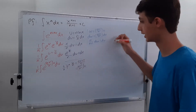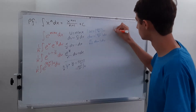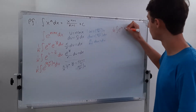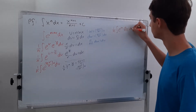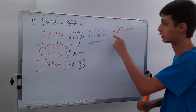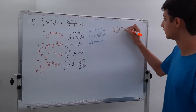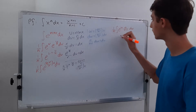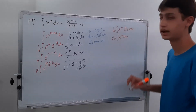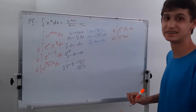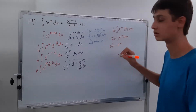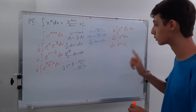Continuing with our 1 over n out front, we now have the integral of e to the w times n over n plus 1 dw. Since this is all just a number, we can factor it out, and the two n's cancel. This becomes 1 over n plus 1 times the integral of e to the w dw. The integral of e to the w is simply e to the w, so this is 1 over n plus 1 times e to the w plus C.